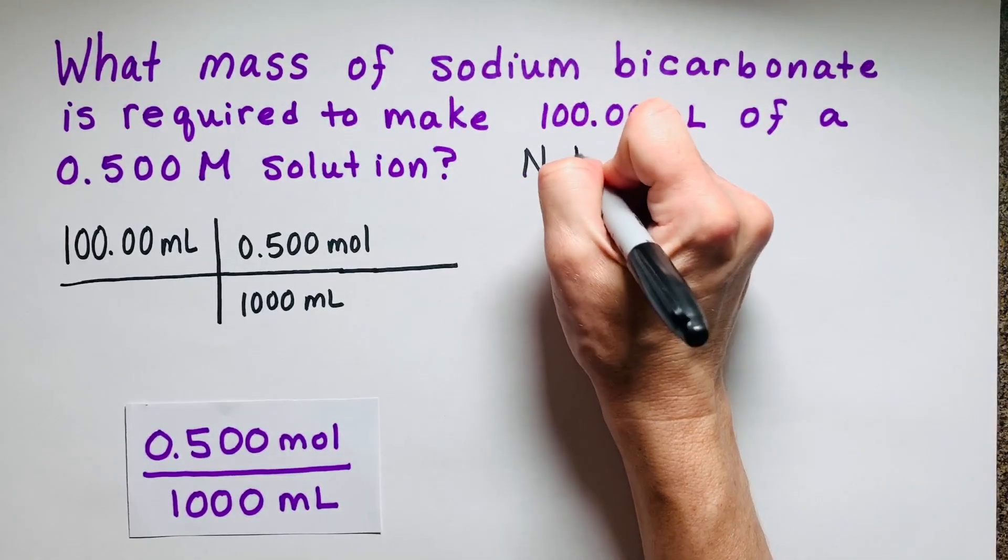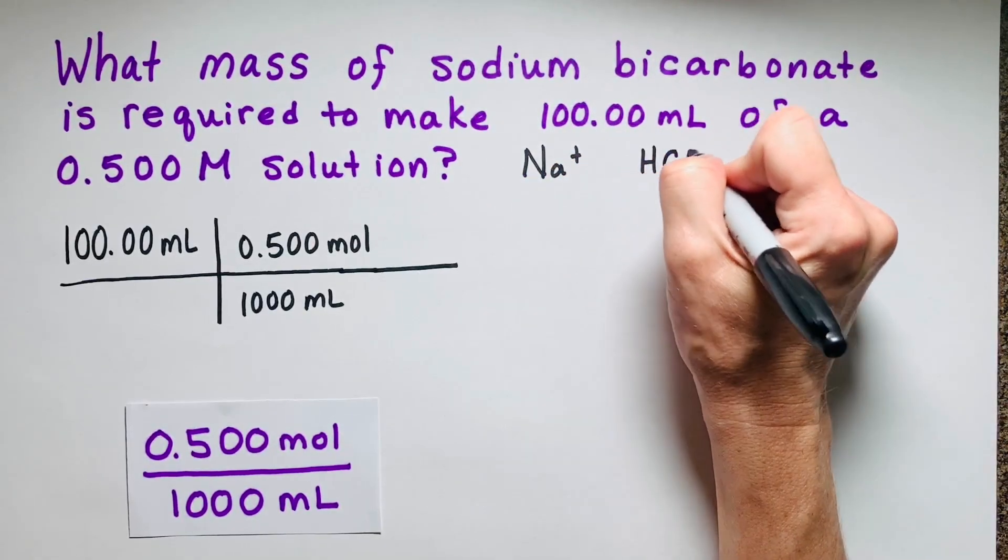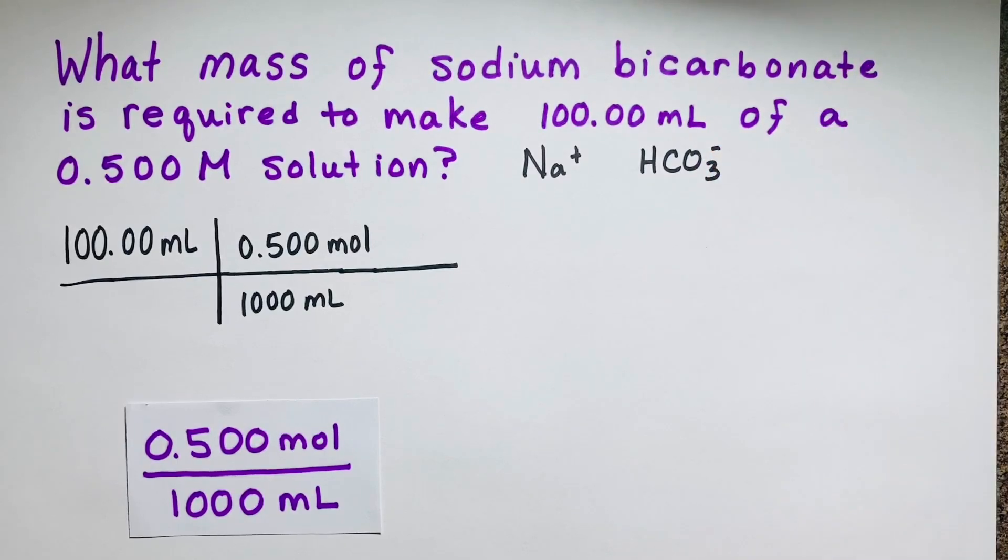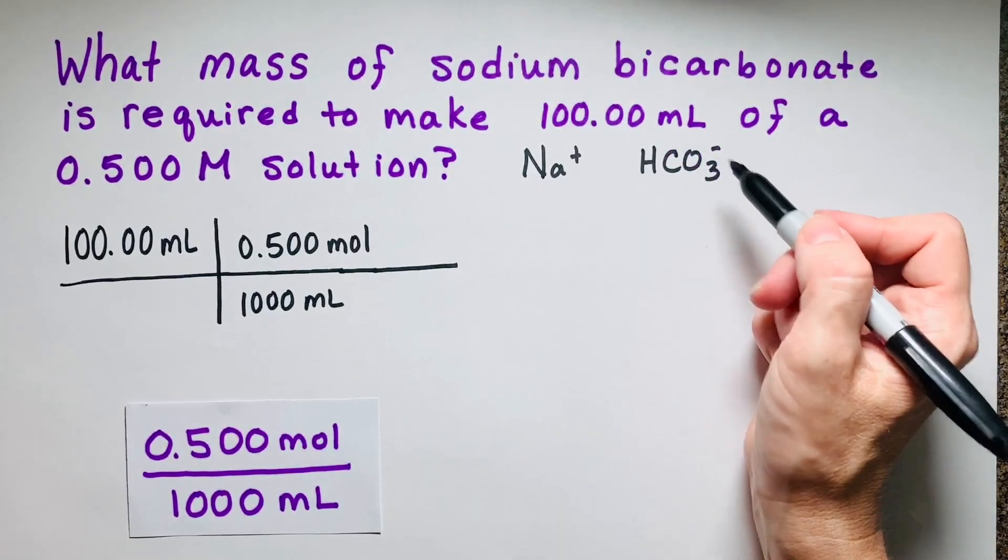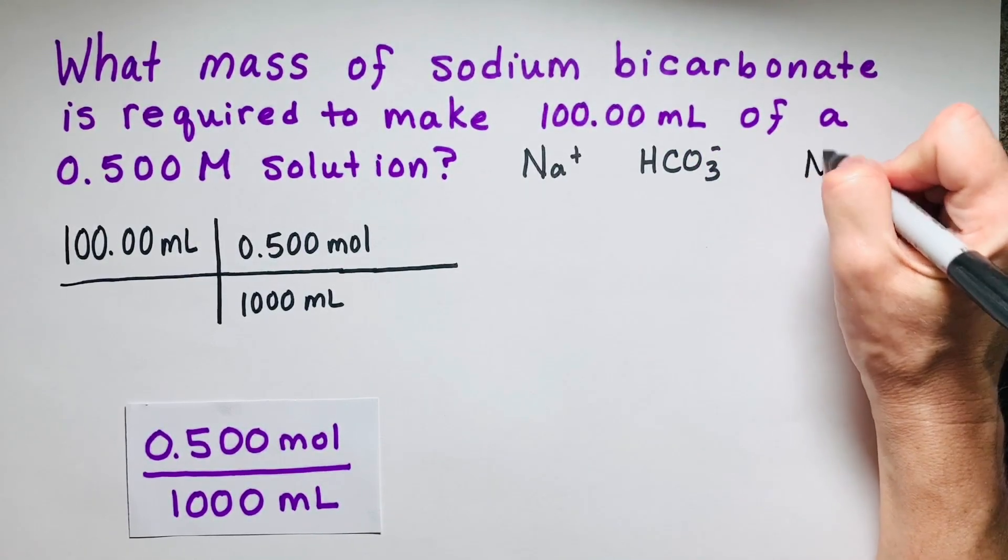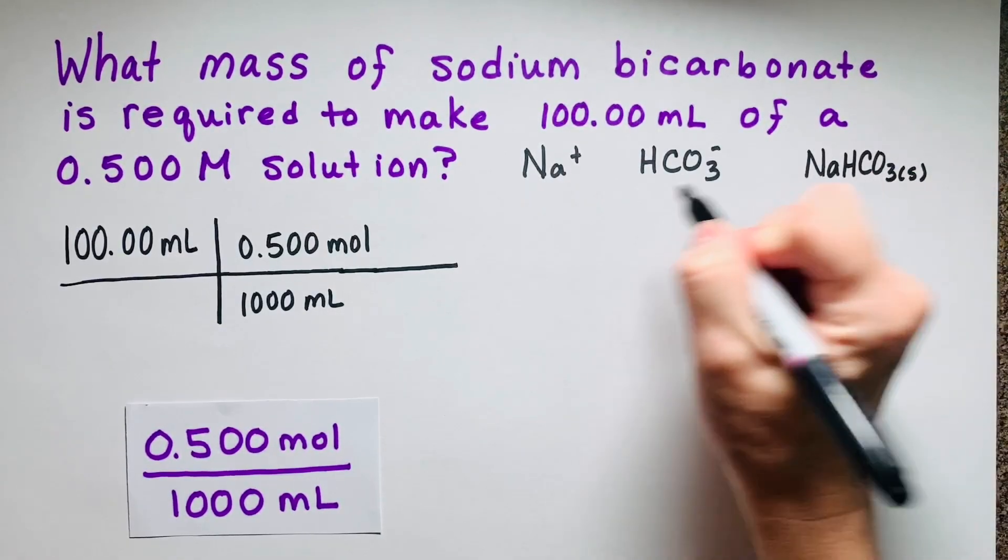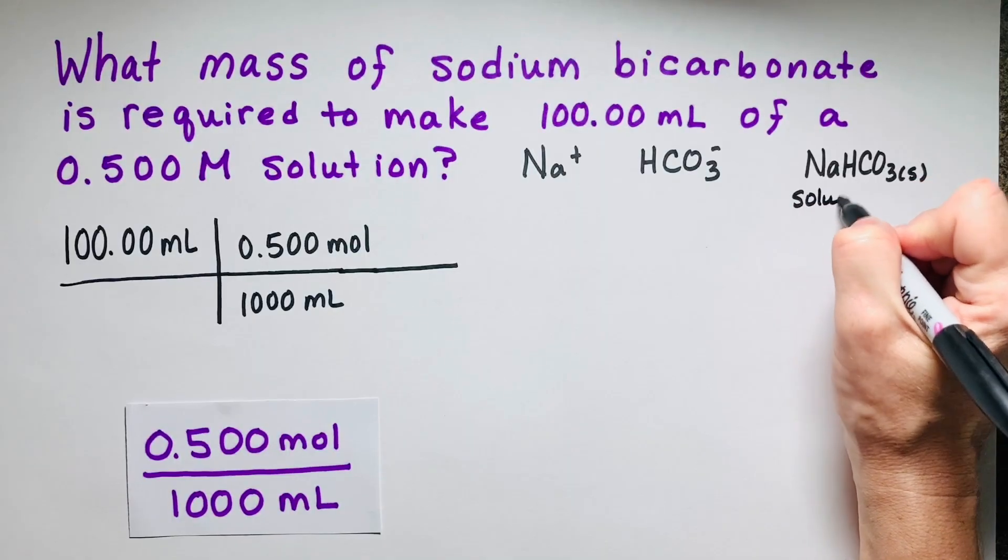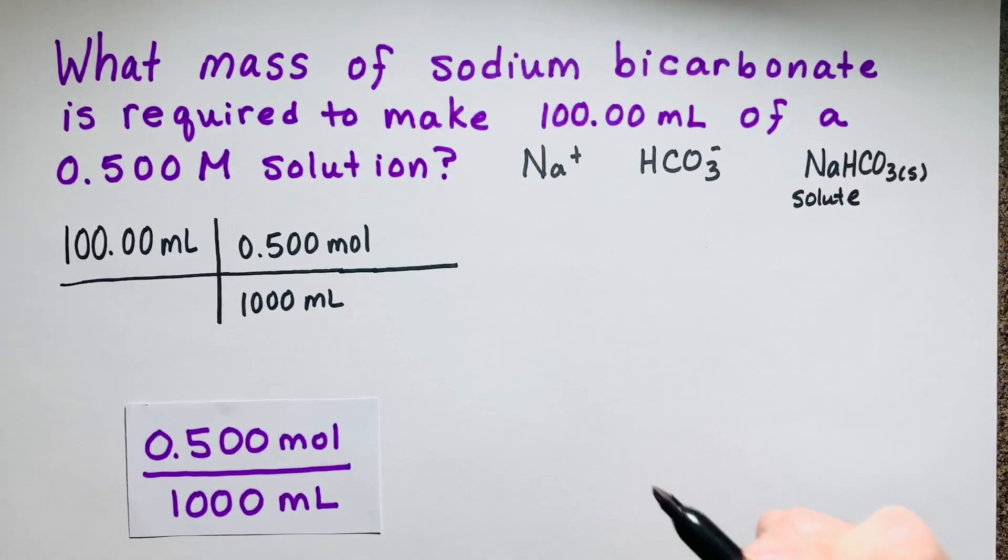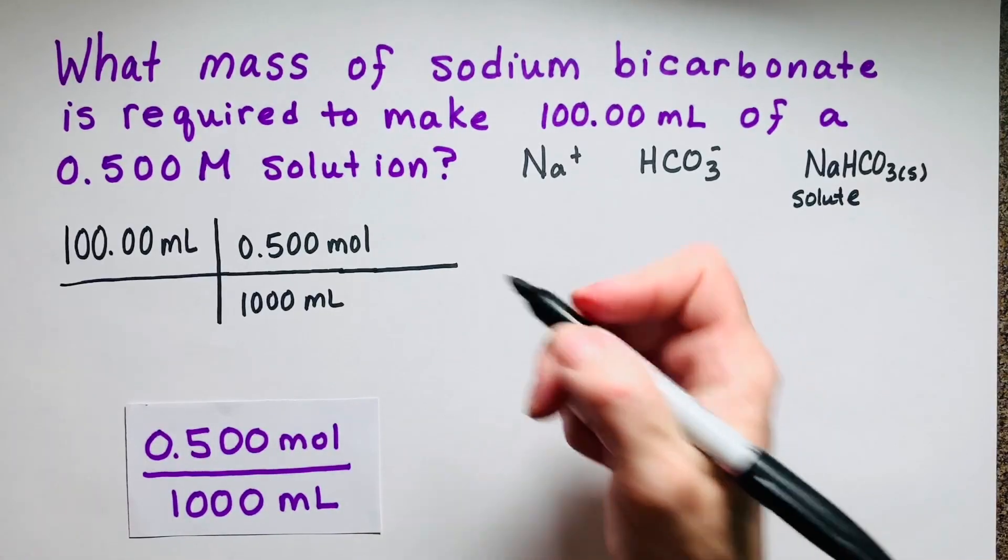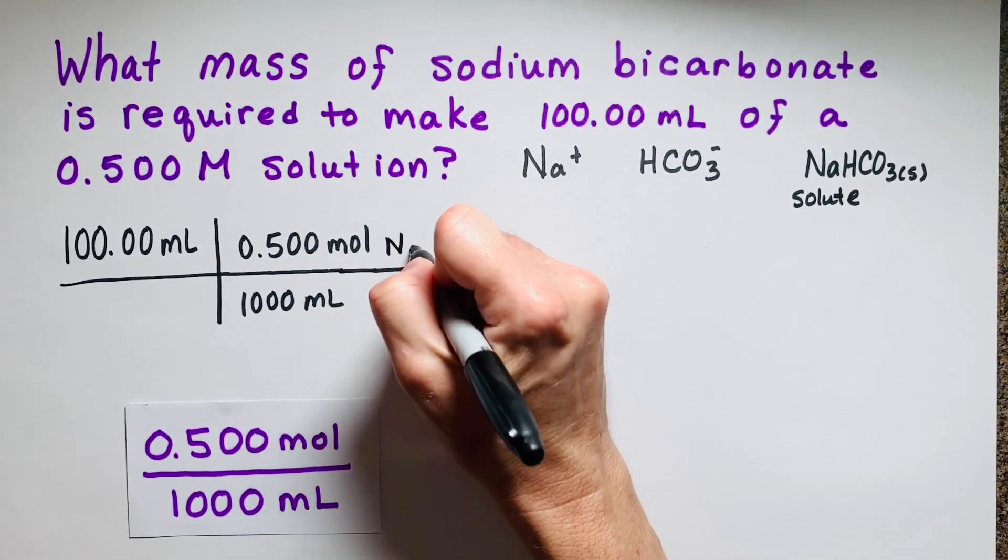Sodium is plus one. Bicarbonate, also called hydrogen carbonate, is going to be HCO3. So the whole thing is going to be NaHCO3, and that's going to be your solid. And that's going to be our solute. You don't measure the solvent. That's something you'll see in the demonstration coming soon. I mass out the solute and I dissolve it to the volume that I've chosen.